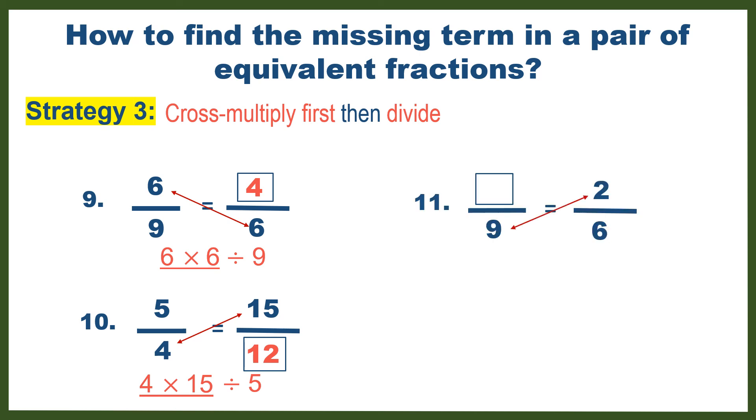Number 11. Cross multiply 9 and 2. The result is 18. Divide 18 by 6, which gives us 3. Number 12. Cross multiply 5 and 6 and divide the result by 3, which gives us the missing term of 10.